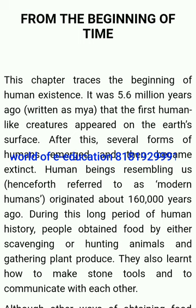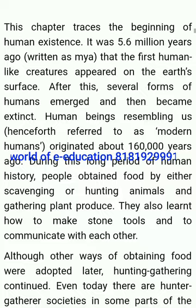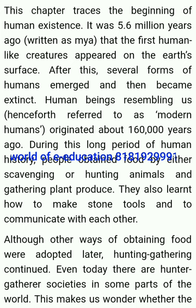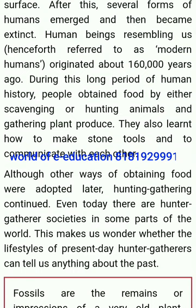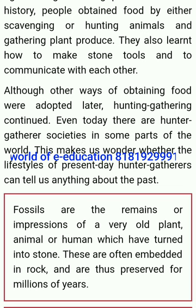From the beginning of time: this chapter traces the beginning of human existence. It was 5.6 million years ago that the first human-like creatures appeared on the Earth's surface. After this, several forms of humans emerged and then became extinct. Human beings resembling us — henceforth referred to as modern humans — originated about 160,000 years ago. During this long period of human history, people obtained food by either scavenging or hunting animals and gathering plant produce. We also learned how to make stone tools and to communicate with each other. Although other ways of obtaining food were adopted later, hunting-gathering continued. Even today, there are hunter-gatherer societies in some parts of the world.